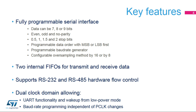The USART is a fully programmable serial interface featuring the following configurable parameters: data length, parity, number of stop bits, data order, baud rate generator, and a configurable oversampling mode by 8 or by 16. The USART can operate in FIFO mode and it comes with two FIFOs — transmit and receive. You also have the option to use basic RS232 flow control with CTS and RTS signals. The RS485 driver enable signal is also supported.